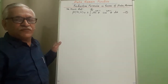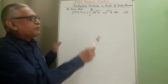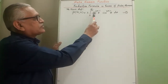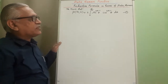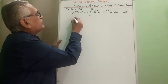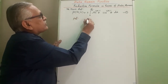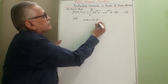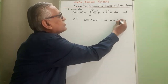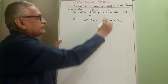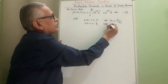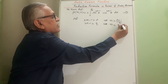To find that reduction formula in terms of beta gamma function, we take the help of a property of the beta function. We know that beta of M,N equals 2 times the integral from 0 to π/2 of sin θ raised to 2M minus 1, times cos θ raised to 2N minus 1, with respect to θ. To obtain the reduction formula, we put 2M minus 1 as P, which gives M equals (P+1)/2, and 2N minus 1 as Q, giving N equals (Q+1)/2.